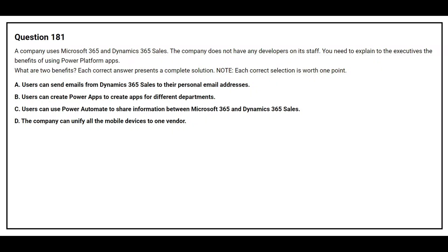Question number 181. A company uses Microsoft 365 and Dynamics 365 Sales. The company does not have any developers on its staff. You need to explain to the executives the benefit of using Power Platform apps. What are two benefits? Option A: Users can send emails from Dynamics 365 Sales to their personal email addresses. Option B: Users can create Power Apps to create apps for different departments. Option C: Users can use Power Automate to share information between Microsoft 365 and Dynamics 365 Sales. Option D: The company can unify all the mobile devices to one vendor.